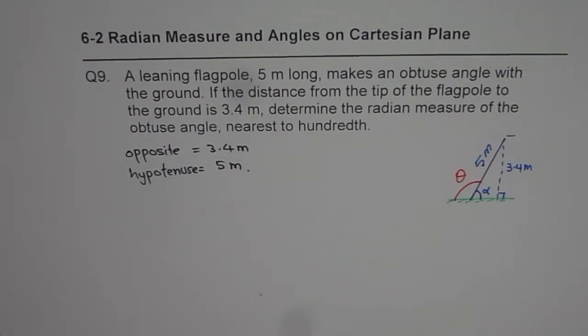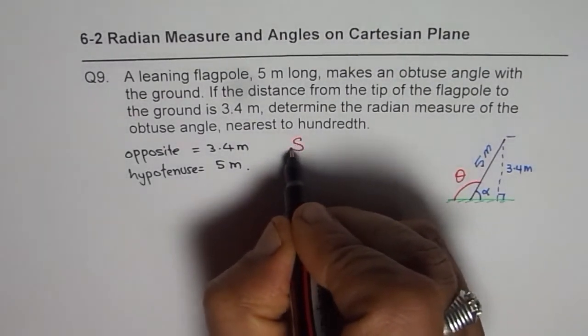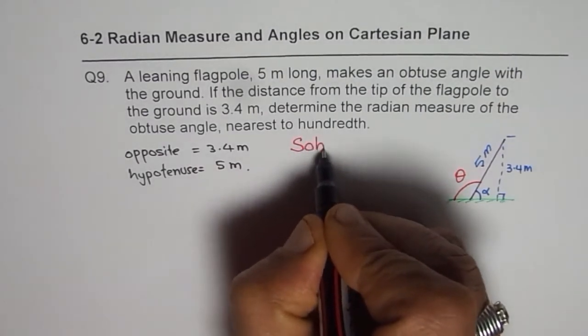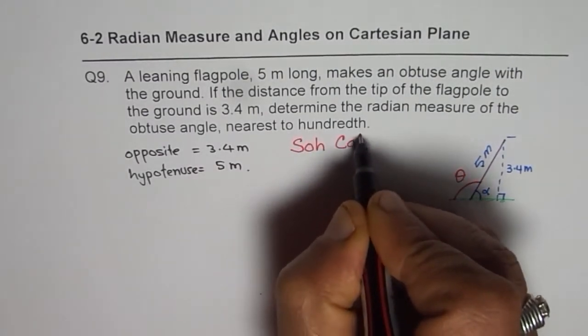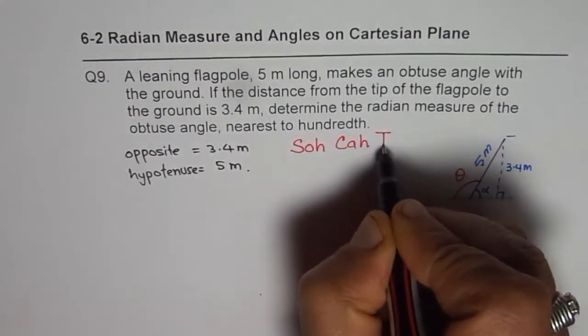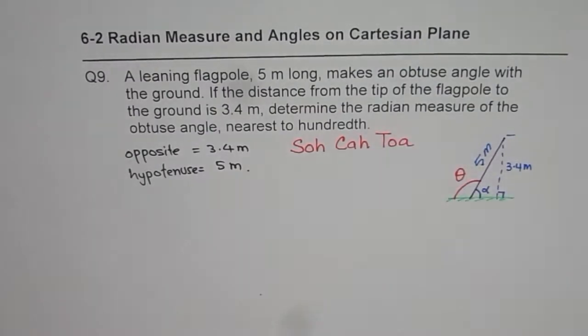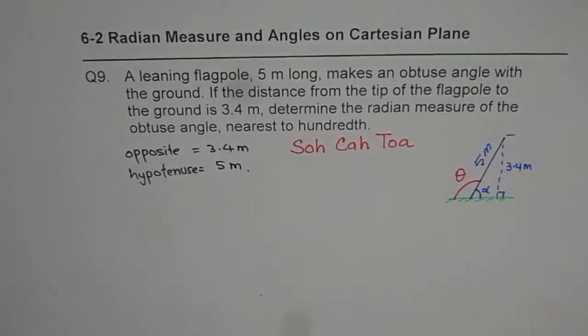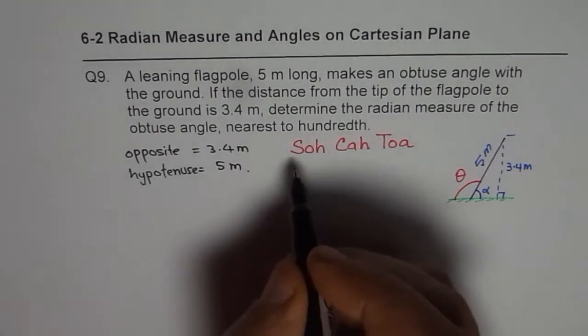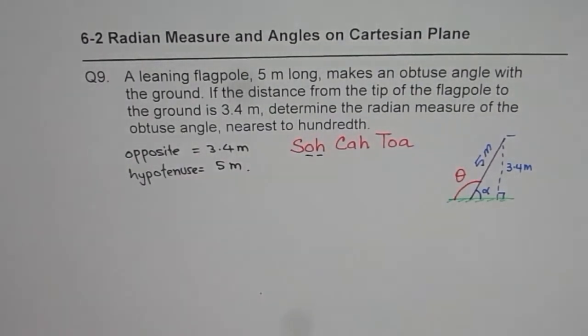So let's remember SOH CAH TOA. Sine is opposite over hypotenuse, cosine is adjacent over hypotenuse, and tangent is opposite over adjacent. Now in our case we are given opposite and hypotenuse, that means we should use sine.